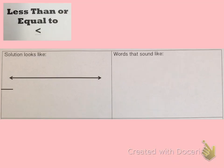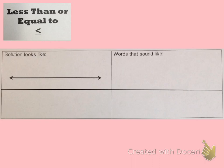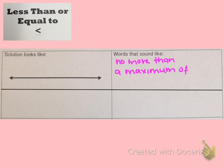Finally, we have less than or equal to. Draw that line for the example problem at the bottom. Words that indicate less than or equal to include 'no more than,' 'a maximum of,' and 'at most.' On a number line, we do a solid dot because it includes the number the dot lands on, and then we draw the arrow to the left of the dot.